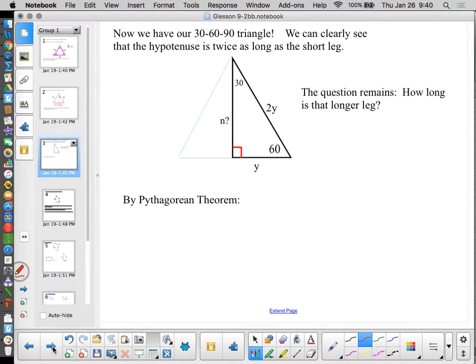So we have our 30, 60, 90 triangle. It's half of an equilateral triangle. The question is, how long is this longer leg? Because I know all three angles now. I know that the short side is Y. I know the hypotenuse is 2Y. How long is the long leg?